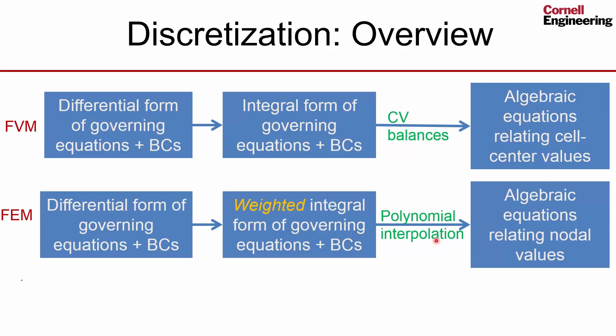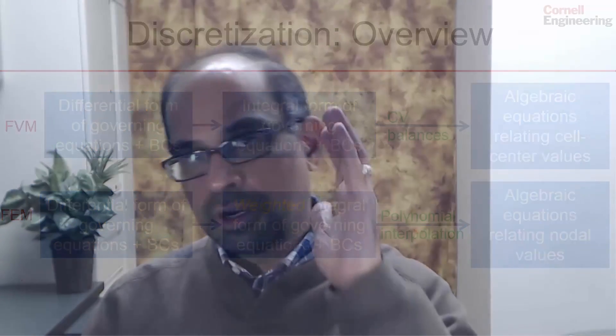You do that by assuming polynomial interpolations within each element for velocity and pressure, but also for your weights. In the finite element method, you're not going to each face to look at the amount of mass or momentum crossing that face. Due to that, conservation is not built into the method, unlike the finite volume method.